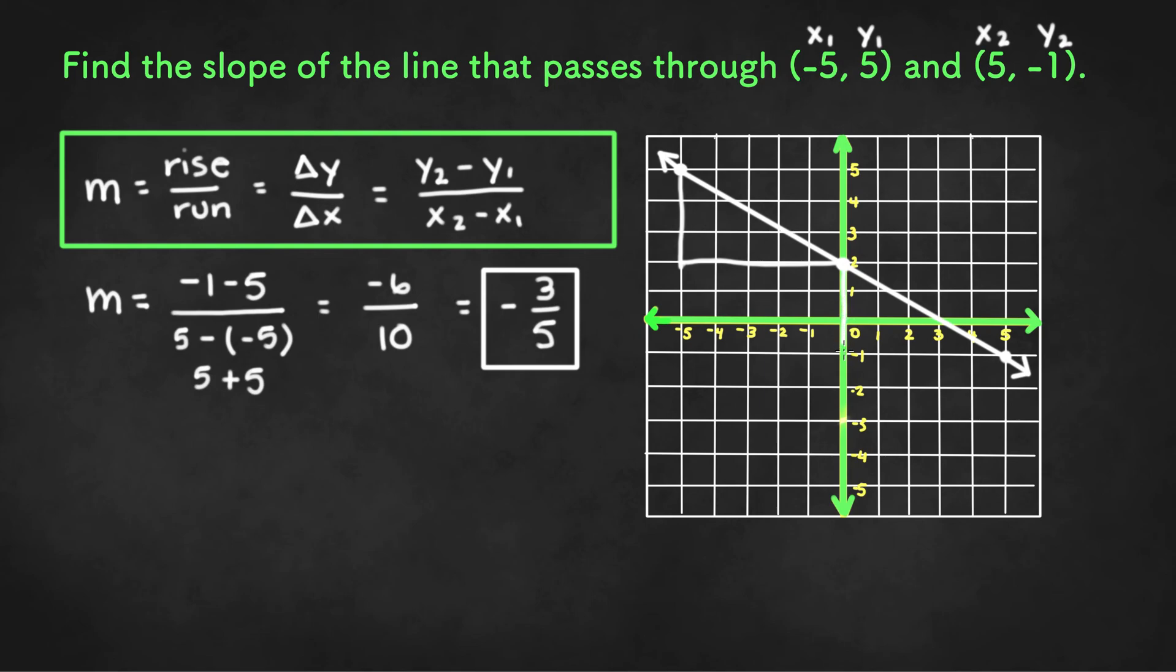We're going down another 3 units and another 5 units. And since it lands on the point 5 negative 1, we know that negative 3 fifths is the right slope.